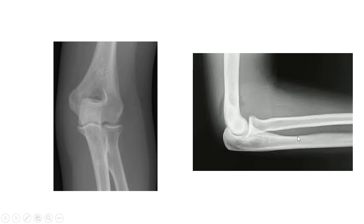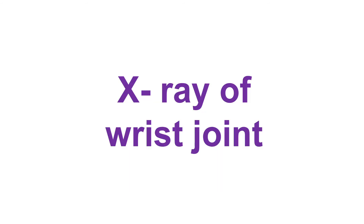Between these two borders, this gap is filled by a membrane called the interosseous membrane, so this is a fibrous joint. Since the elbow joint is a uniaxial joint, only flexion and extension movements occur at the elbow joint. Now the next joint is the wrist joint.